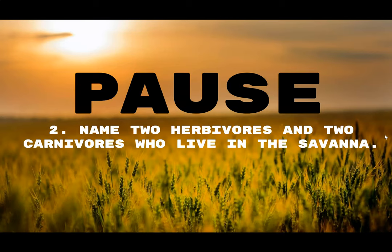Pause your video — we are on question number two. Name two herbivores and two carnivores who live in the savanna. Even though grassland and savanna have a lot in common, the types of animals are very different. For herbivores you could say elephant, rhino, giraffe, zebra, or antelope. For carnivores, creatures like lions or cheetahs, who only hunt other animals for food.